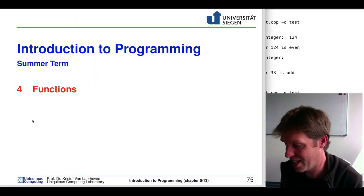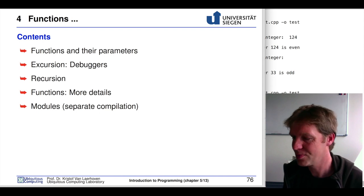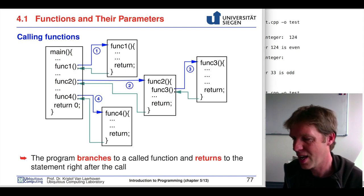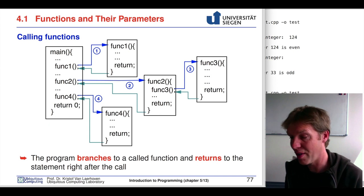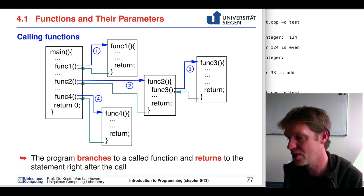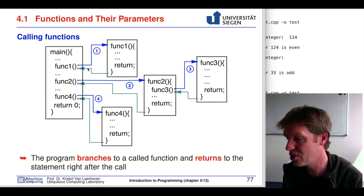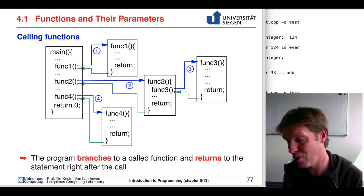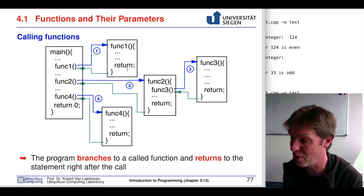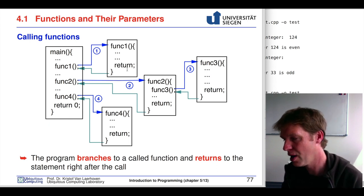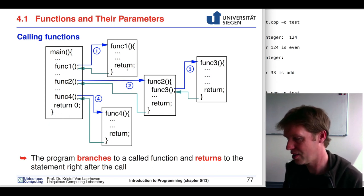Now let's look at functions. Functions are just like the main function, but you can define your own names and your own functions, and they have arguments or parameters. In your main, you can call those functions by having their name and then between the brackets, you can name your arguments. You have to specify what this function does, just as you specify what the main function does when your program needs to be executed.